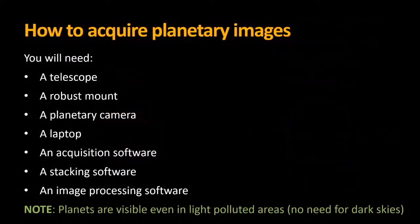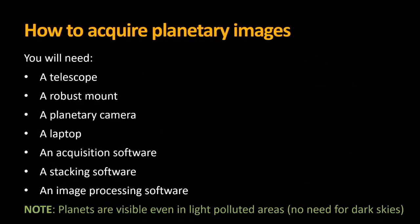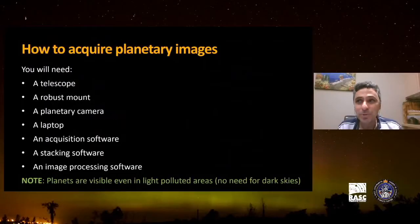What do you need to acquire planetary images? A telescope, a robust mount, a planetary camera, a laptop, an acquisition software, a stacking software, and image processing software. The good news is that planets are visible even in light-polluted areas, so you don't have to go to Algonquin Park to get beautiful images.